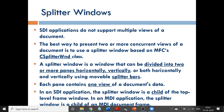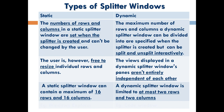Now we are going to discuss about the different types of splitter windows. The first type is called the static type. As the name suggests, once you have created the rows and columns — once you have split the window — you cannot change it. It is not dynamic. That type of splitter window is called a static splitter window. Once created, it cannot change the number of rows and columns.